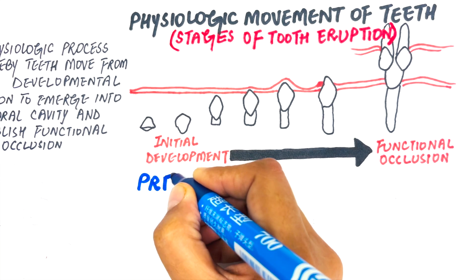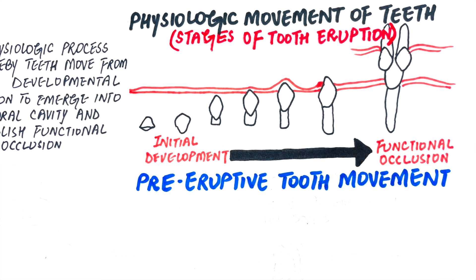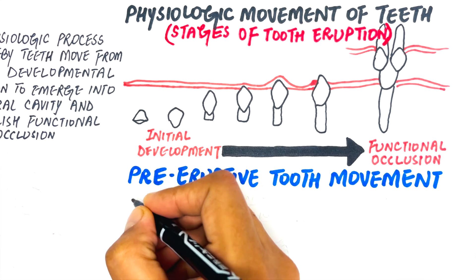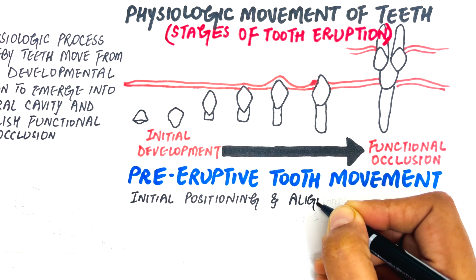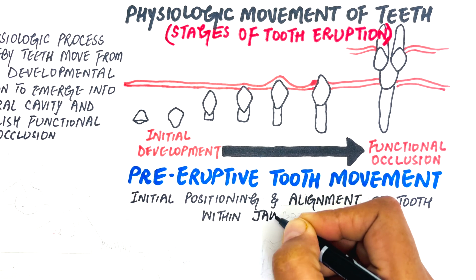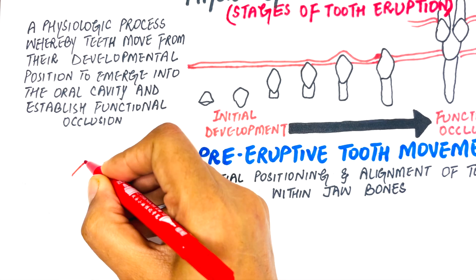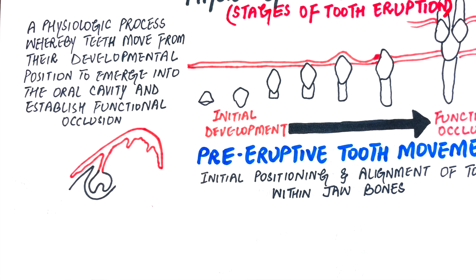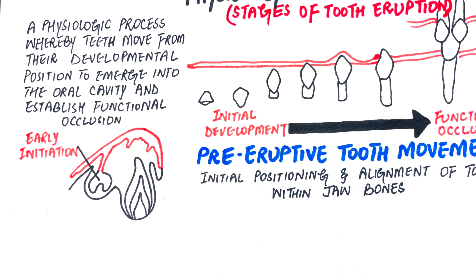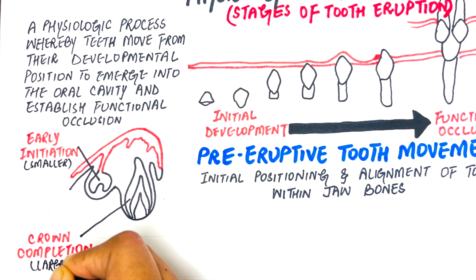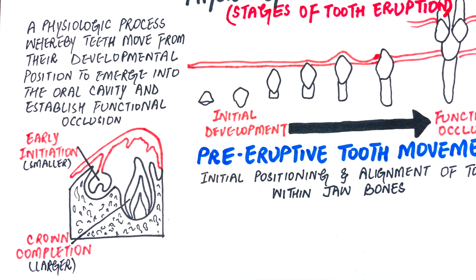The pre-eruptive stage involves the initial positioning and alignment of tooth germs within the jaw bones so they can prepare for eruption. It is considered the constant movement of the tooth germs and their crypts, or developing bony sockets, within the growing jaws. It involves all movements of primary and permanent tooth germs from the time of their early initiation and formation, when they are too small, to the time of crown completion, when they are considerably larger.